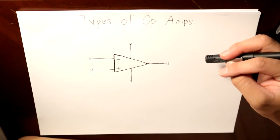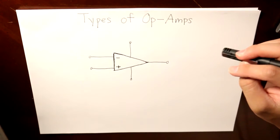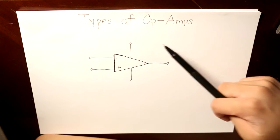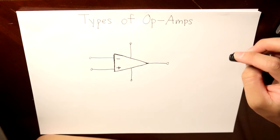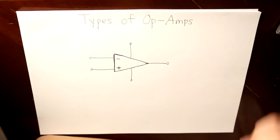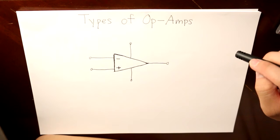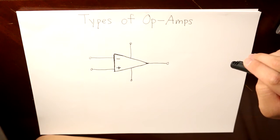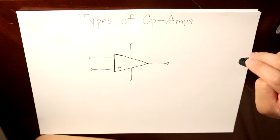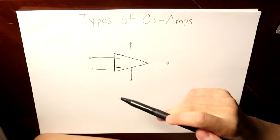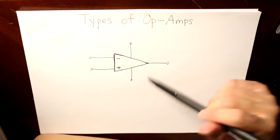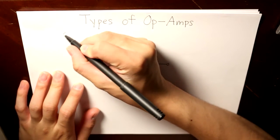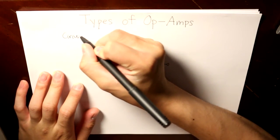Hello everyone, today's video I will be talking about the types of op amps there are in electric circuits. Particularly, I'm going to talk about the ideal op amp and the two basic configurations of it. An op amp looks like this, and we can label this as the circuit symbol.